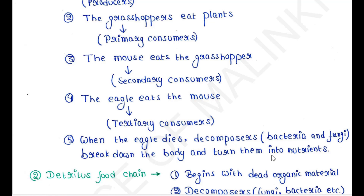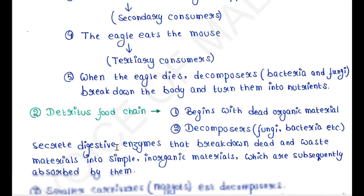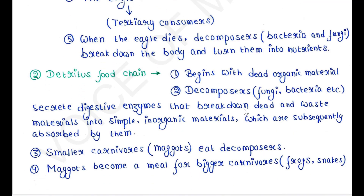When the eagle dies, decomposers such as bacteria and fungi break down the body and turn them into nutrients. The detritus food chain begins with dead organic materials. Decomposers like fungi and bacteria secrete digestive enzymes that break down dead and waste materials into simple inorganic materials, which are subsequently absorbed by them. Small carnivores such as maggots eat those decomposers.